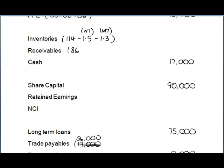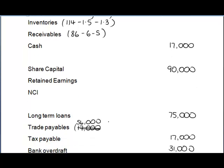Note 6 covers intragroup balances. The balances have been agreed at 6 million and 5 million respectively. We therefore reduce receivables by 6 million and 5 million, and reduce payables by 6 million and 5 million. Whether you work in round thousands or actual numbers is entirely up to you — both are acceptable in the exam.